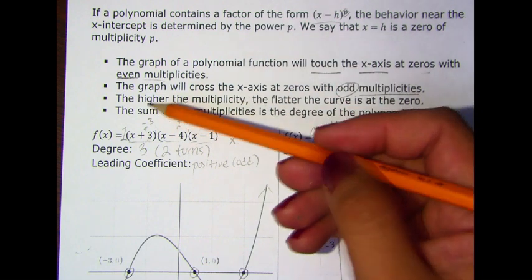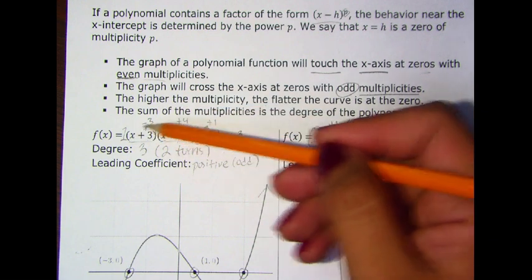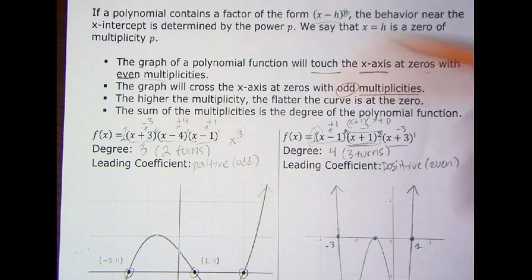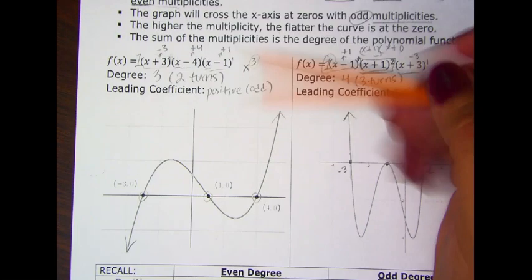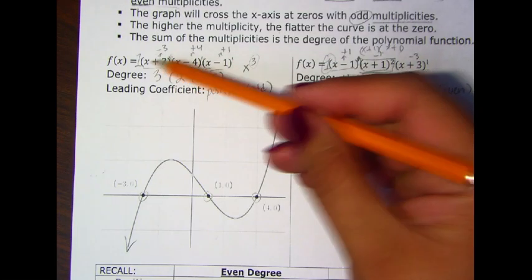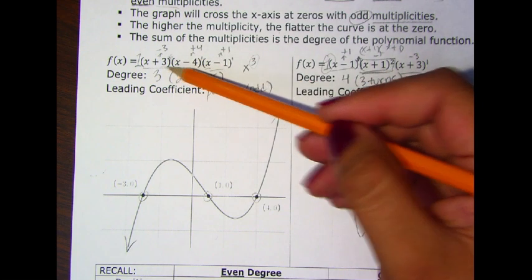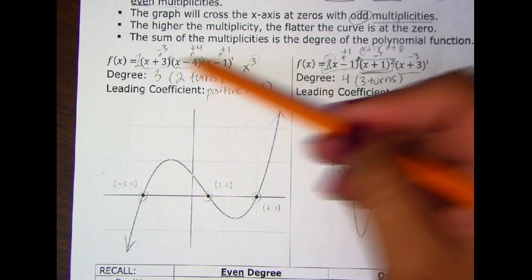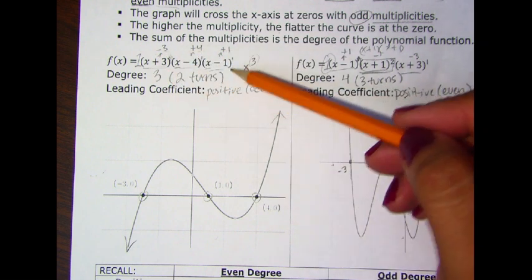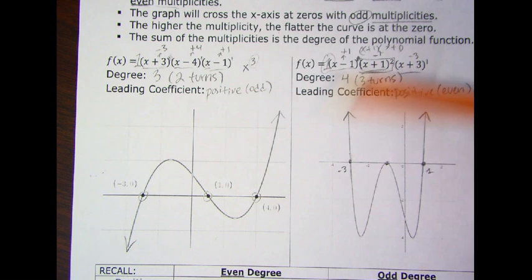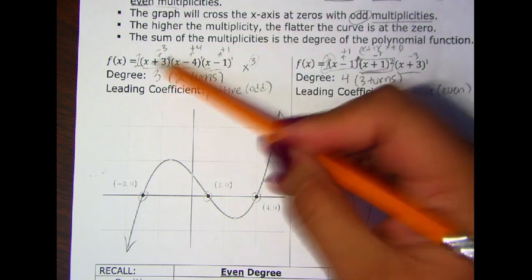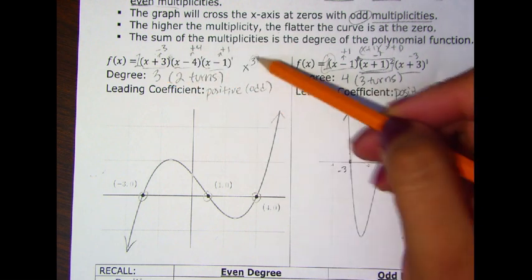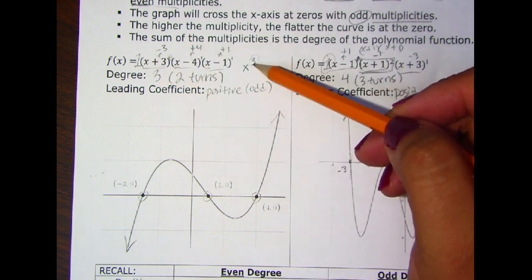The sum of the multiplicities — all of these exponents added together — will give you the degree of the polynomial. For example here, based on the factors given, we can conclude that this polynomial has zeros at negative 3, positive 4, and positive 1, because those zeros are the opposite of the numbers you see in the factors. Since they all have an exponent of 1, x is multiplied times itself 3 times, giving the graph a degree of 3.